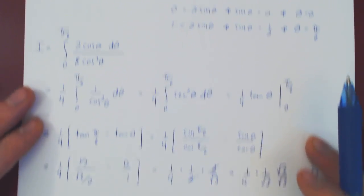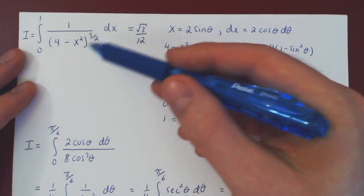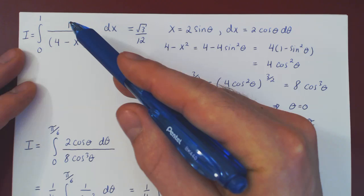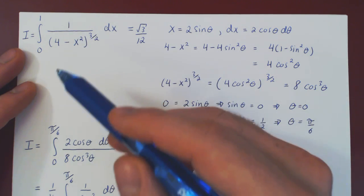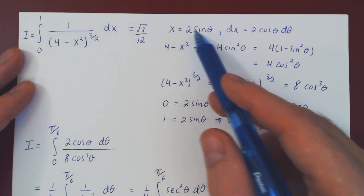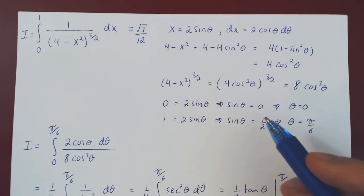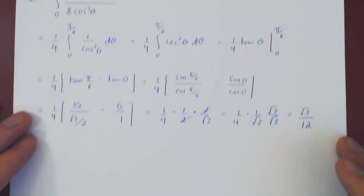If I gave you the exact same integral with an X or an X cube, then of course, you could make the same trig substitution, which would work, but you can do much simpler by making a simple U substitution. Right?